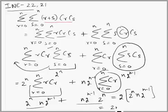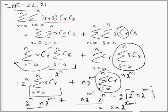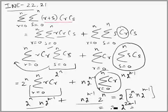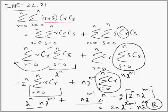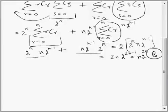So it is 2n · 2^(2n-1). We can combine this to n · 2^(2n). The answer is n · 2^(2n), which is choice B. Now we move to question number 22.